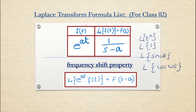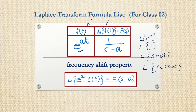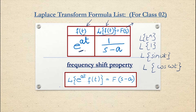Today we are going to discuss the Laplace transform of the exponential function e raised to at. When we have a function in the time domain, f(t) = e^(at), where a is a constant — a can be positive, negative, or zero. Taking the Laplace transform of this function gives us the result in the s-domain (frequency domain): the Laplace transform of e^(at) is 1/(s − a).